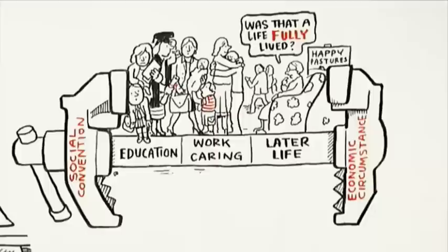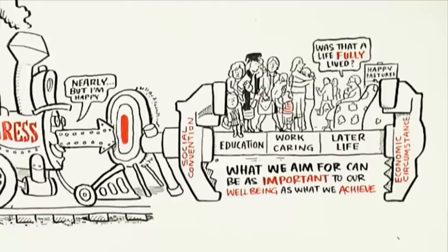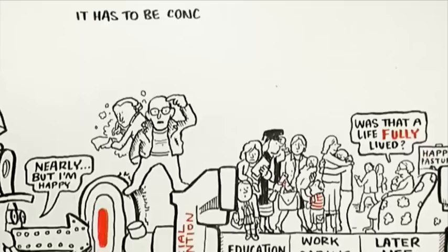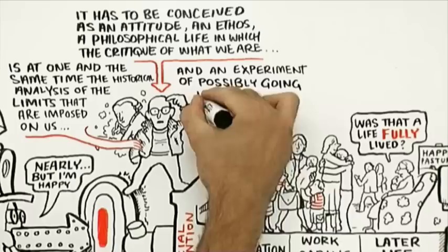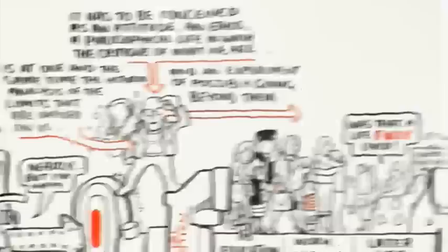So what we aim for can be as important to our well-being as what we achieve. As Michel Foucault says of Kant's own description of the Enlightenment, it has to be conceived as an attitude, an ethos, a philosophical life in which the critique of what we are is at one and the same time the historical analysis of the limits that are imposed on us and an experiment with the possibility of going beyond them.